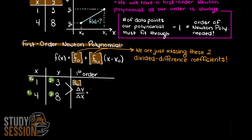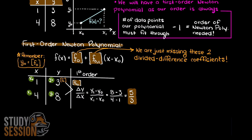Our first order divided difference is simply our difference in our y values divided by the difference in our x values. For higher orders this will get a bit more complicated, but we will talk about that in the coming example videos. To find our first order divided difference, we have y1 minus y0 over x1 minus x0, which works out to be 5 over 3. Applying this newly found coefficient and remembering that the divided difference of f0 is simply y0, we can go ahead and solve and simplify for our Newton interpolating polynomial.